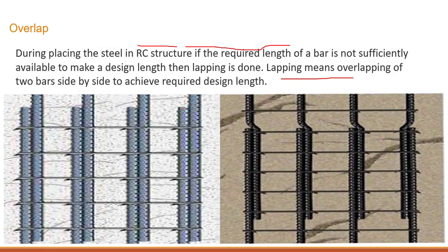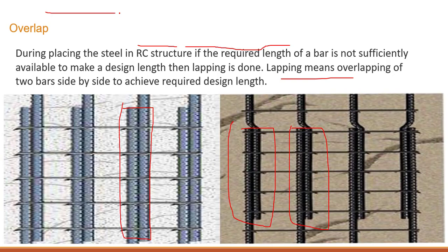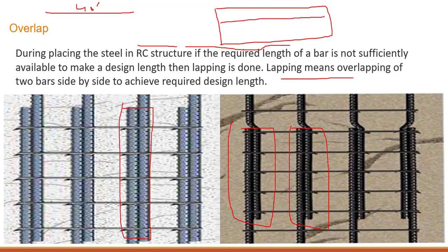In this picture you can see the overlapping of two bars. The standard length of one bar is 40 feet. Let's suppose we have one footing with a length of 50 feet — we need to place a 50-foot bar, but the standard length is only 40 feet. So how do we achieve the design length? Definitely with overlapping — we start from one position and go up to 40 feet.